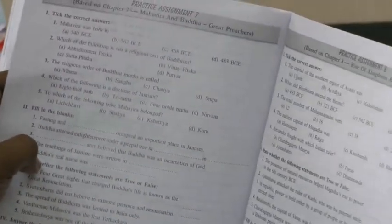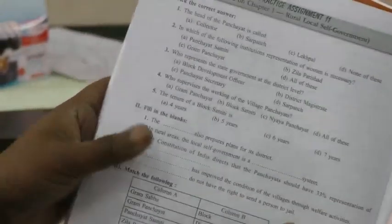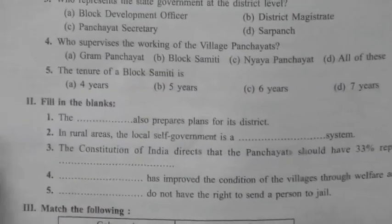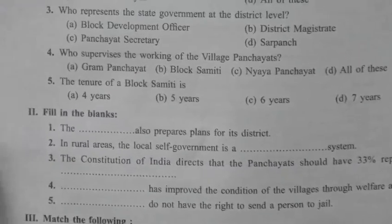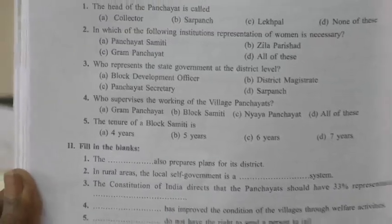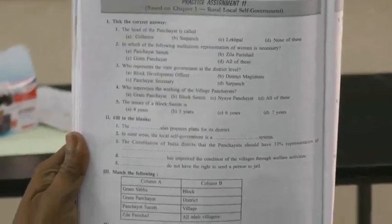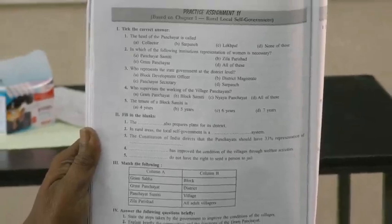You also have to do another assignment — the third assignment: Rural Self-Government, page 134. This is your holiday homework: Assignment 1, Assignment 4, and Practice Assignment 11.